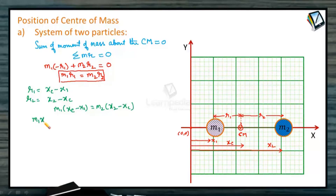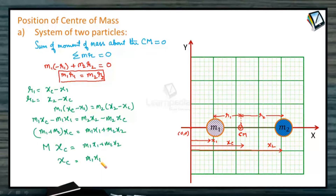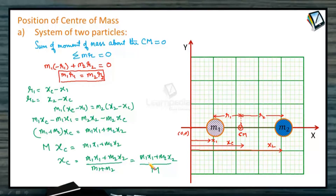Expanding: M1·XC − M1·X1 = M2·X2 − M2·XC. Bringing all XC terms together: (M1 + M2)·XC = M1·X1 + M2·X2. So the coordinate of the center of mass is XC = (M1·X1 + M2·X2) / (M1 + M2). If we know the coordinates of M1 and M2, we can easily calculate XC.